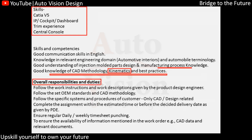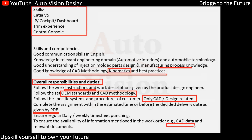For overall responsibility and duties — work instructions need to be followed, as given by the product design engineer or lead. Whatever OEM standards and methodology are set, those need to be followed. The specific system and procedure of the customer for CAD and design-related work — geometrical set constraints, releasing parts, tooling line, parting line properties — everything is included. Assignment completion with estimated delivery dates and regular daily and weekly time-tracking are also required.